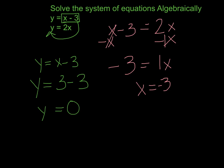So y is equal to 0. Now I'm just going to write them as an ordered pair. My x is negative 3. My y is 0. So the point at which they intersect would be negative 3, 0.